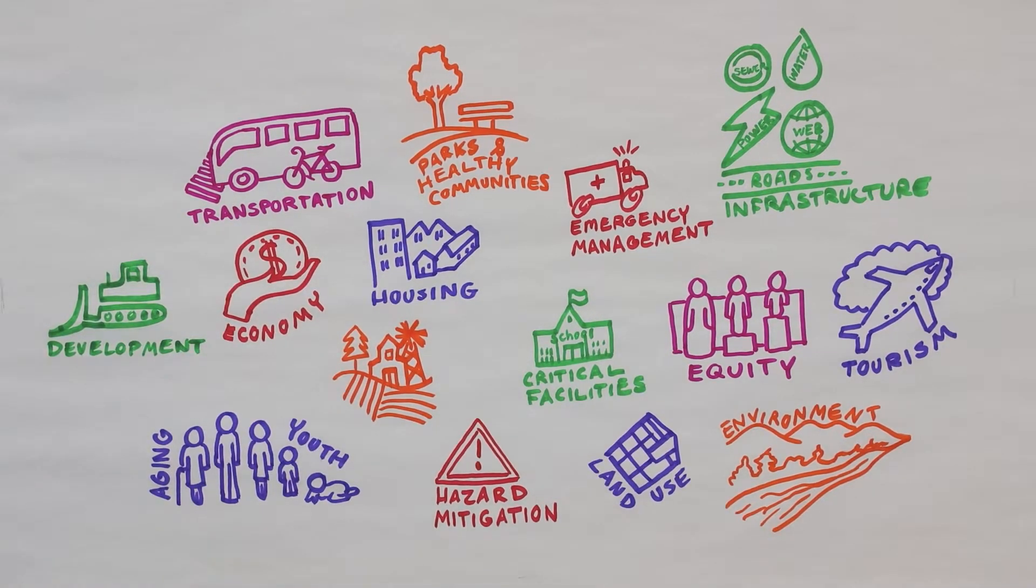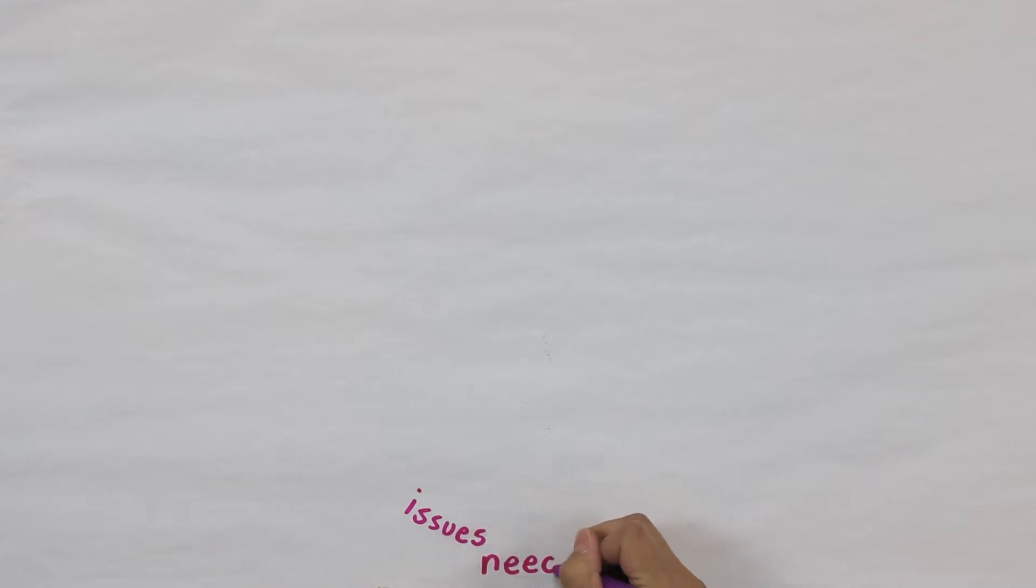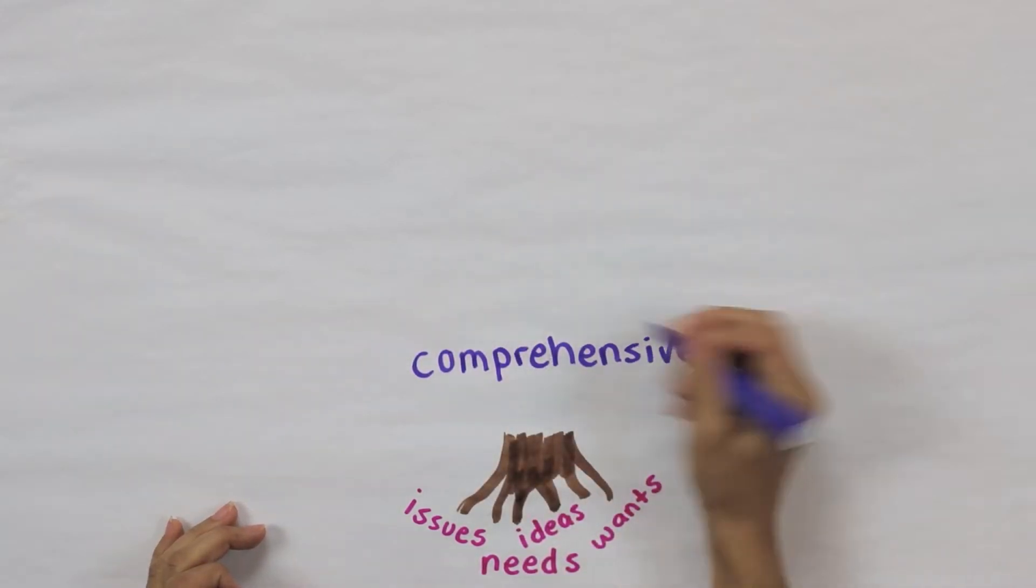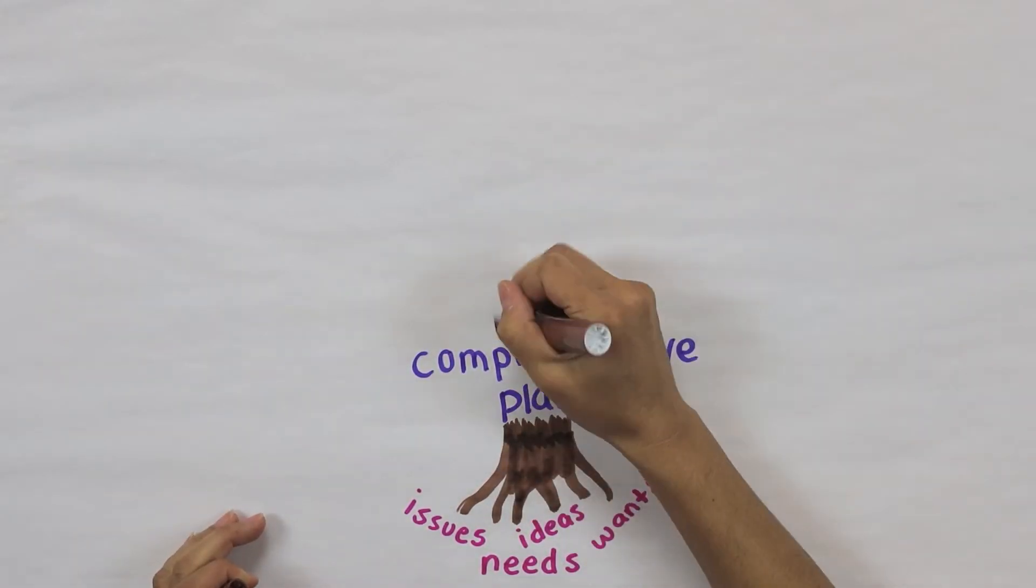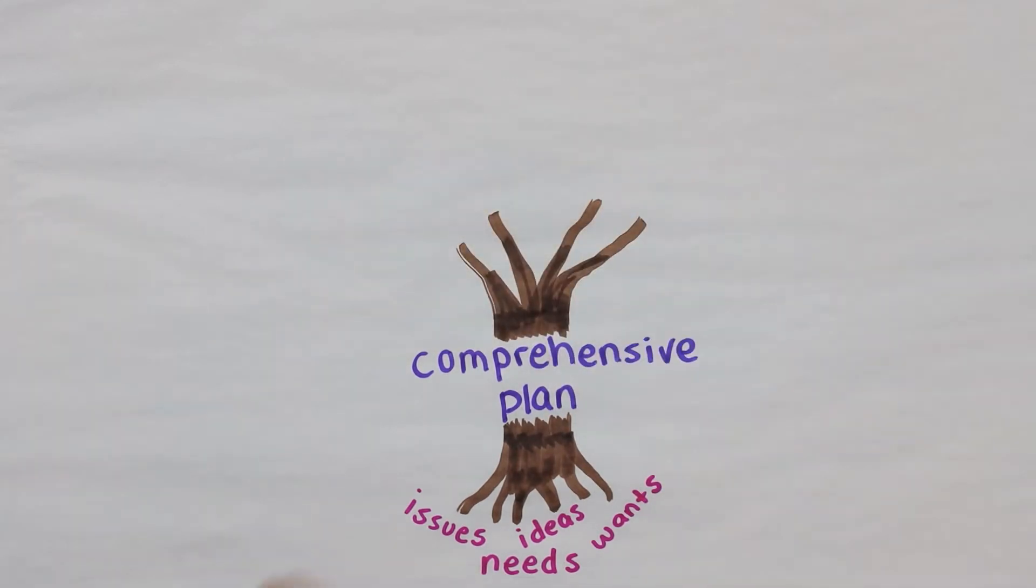So how does it work? First, we ask residents to tell us about the issues, needs, wants, and ideas for their community. Next, the plan creates a vision for what we want the county to be. Then it